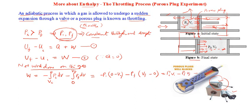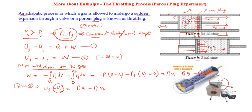Substituting equation three into equation two: Uf − Ui = Pi·Vi − Pf·Vf. Rearranging by taking the Pf·Vf term to the left side and Pi·Vi to the right: Uf + Pf·Vf = Ui + Pi·Vi.